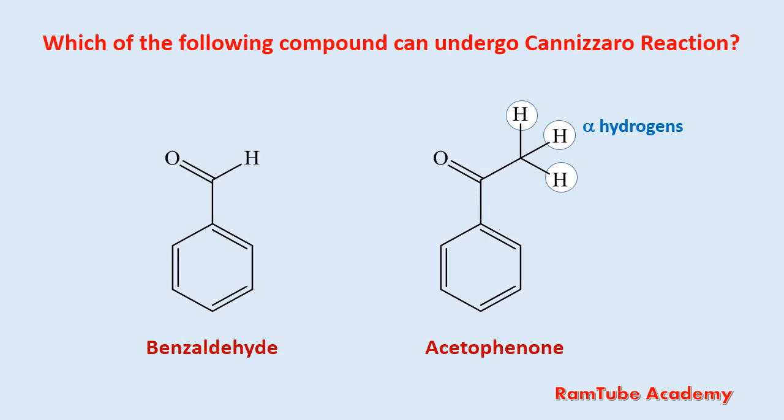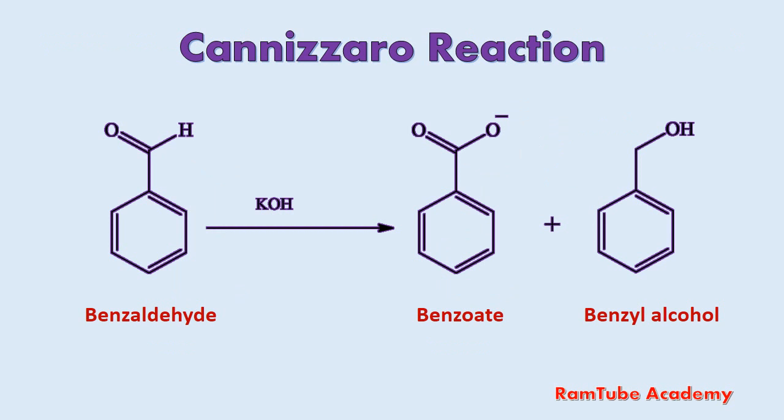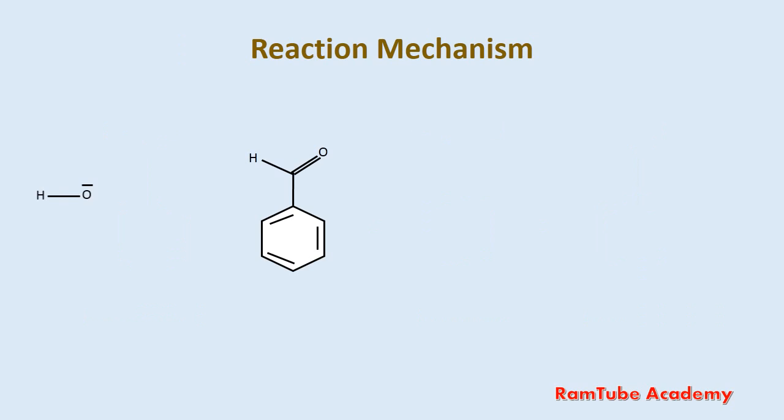That means benzaldehyde is the compound which can undergo the Cannizzaro reaction. When benzaldehyde is reacted with a base like KOH or potassium hydroxide, it produces benzoic acid and benzyl alcohol. You can watch the reaction mechanism in animation. Thank you once again for watching the video.